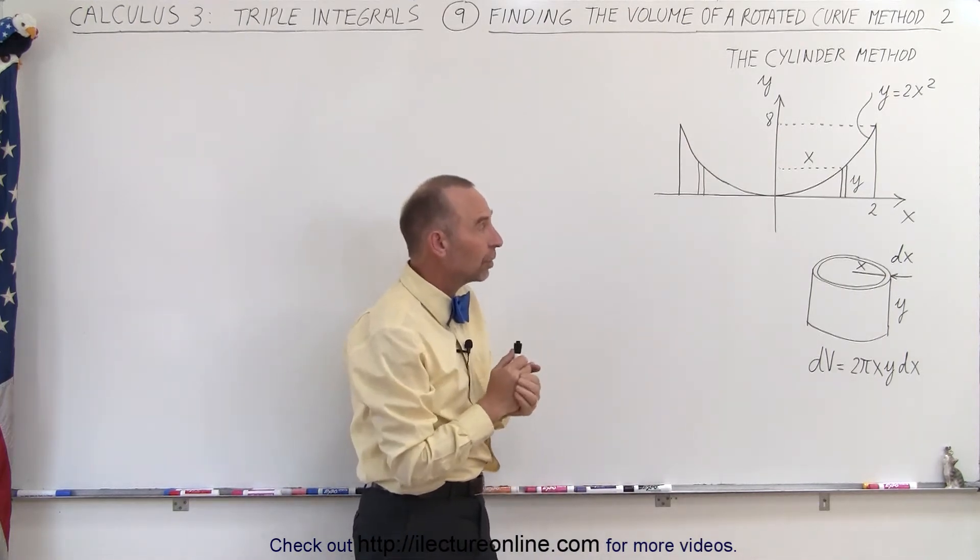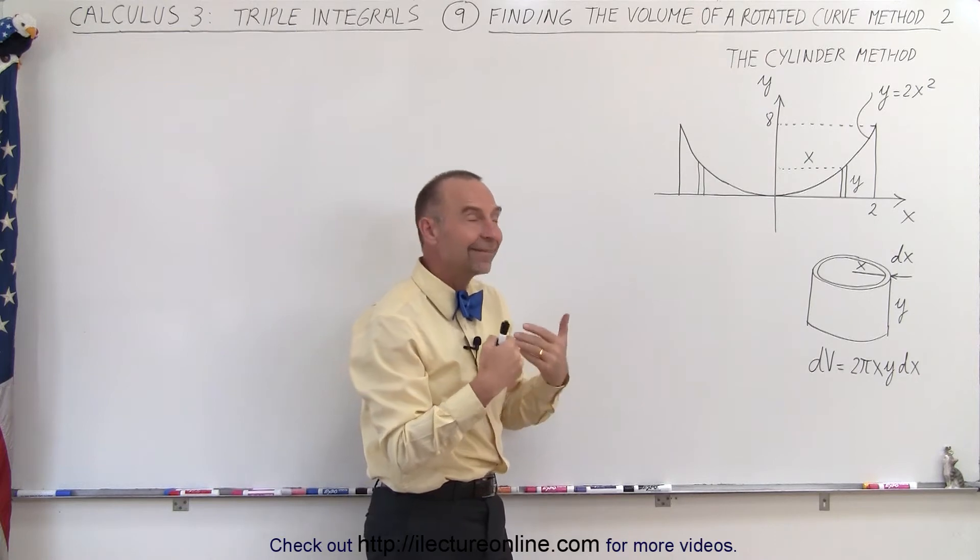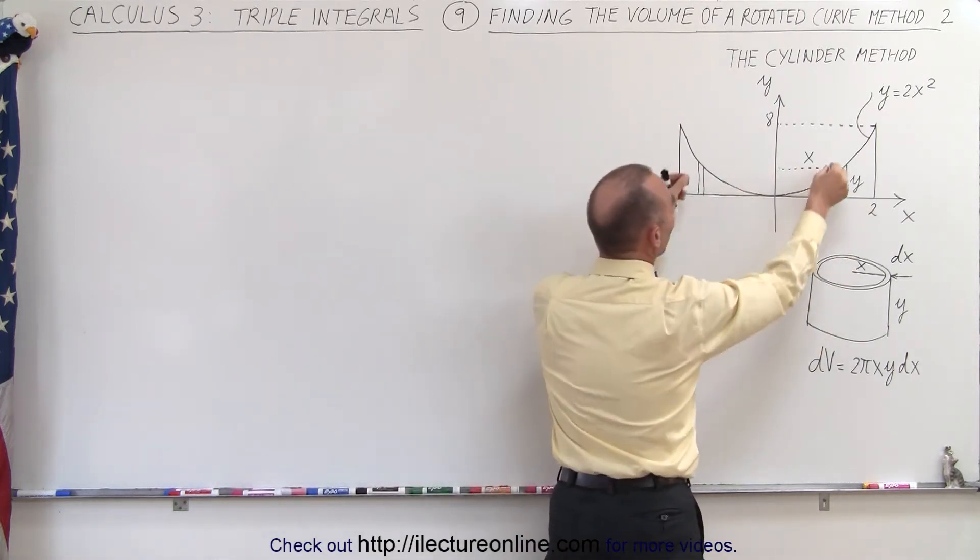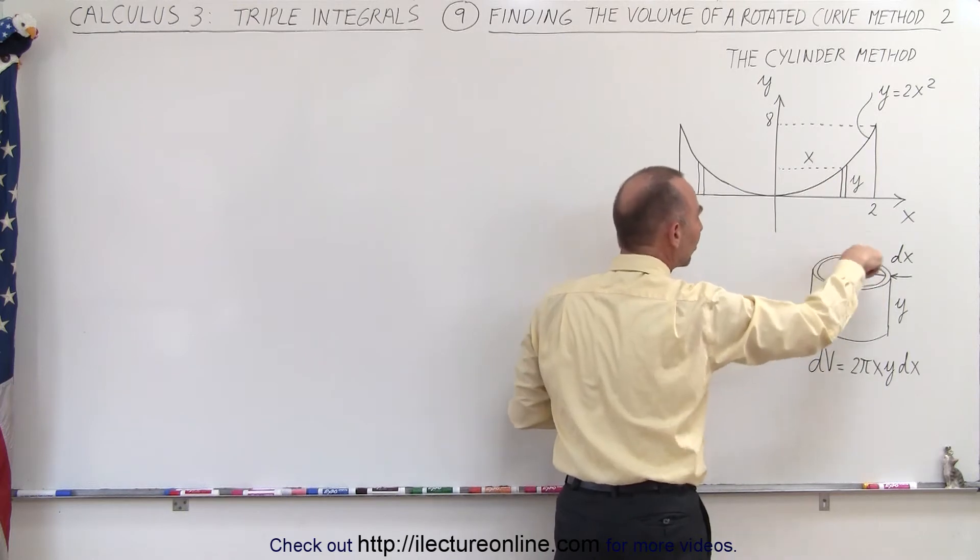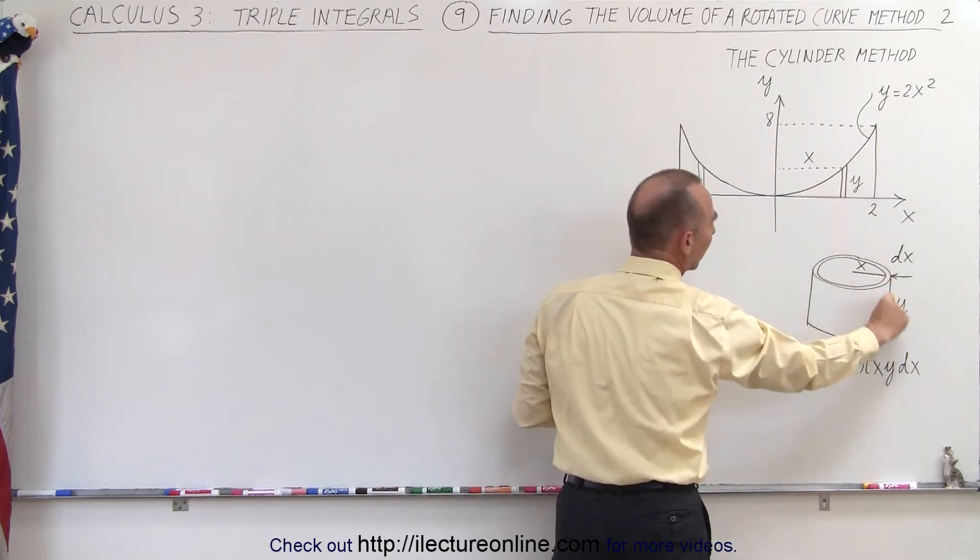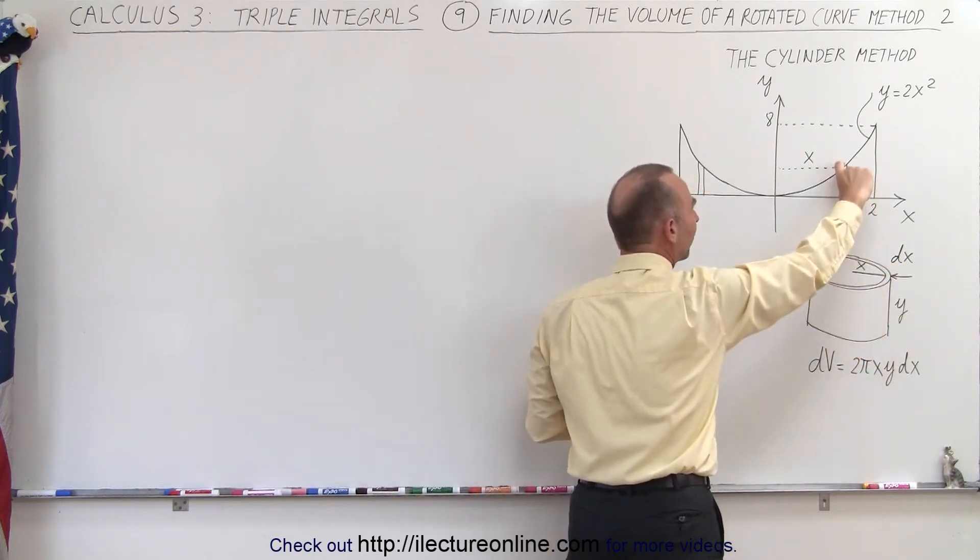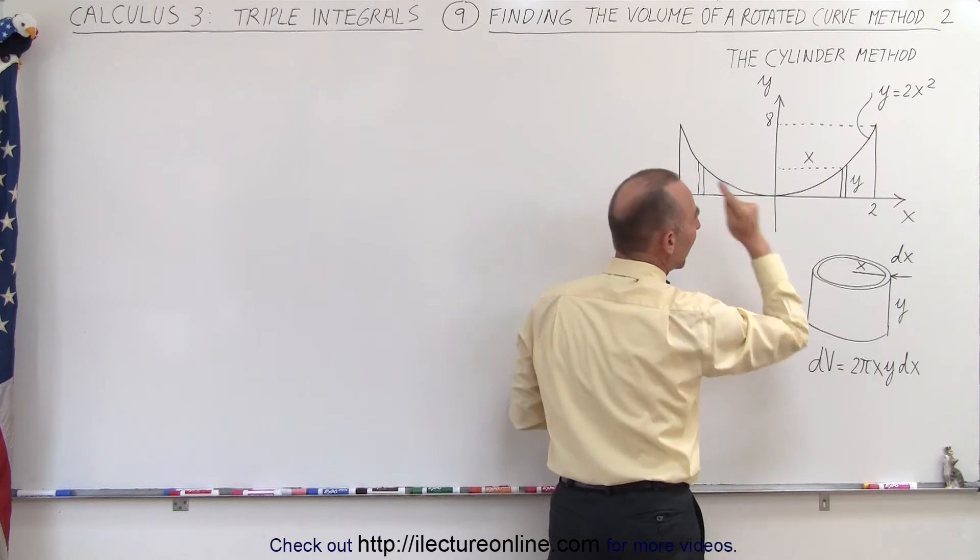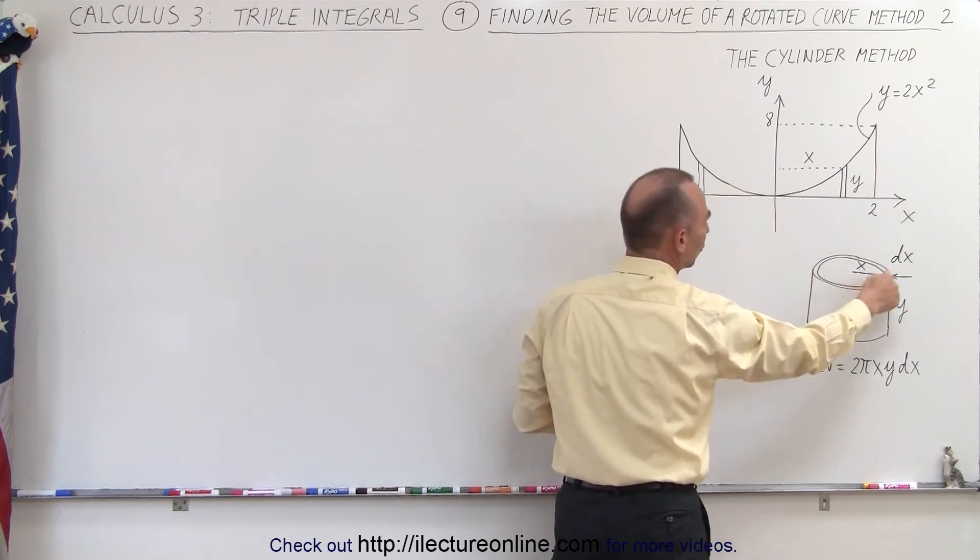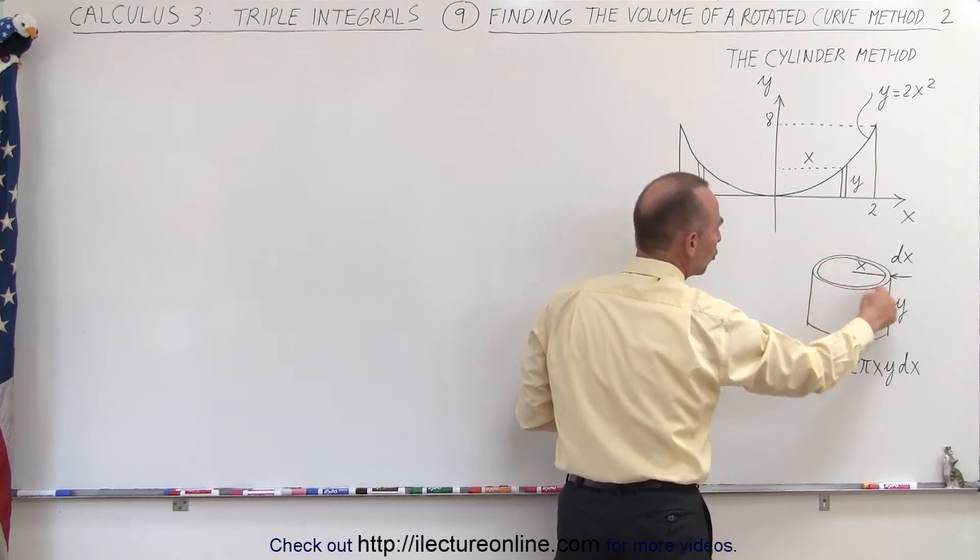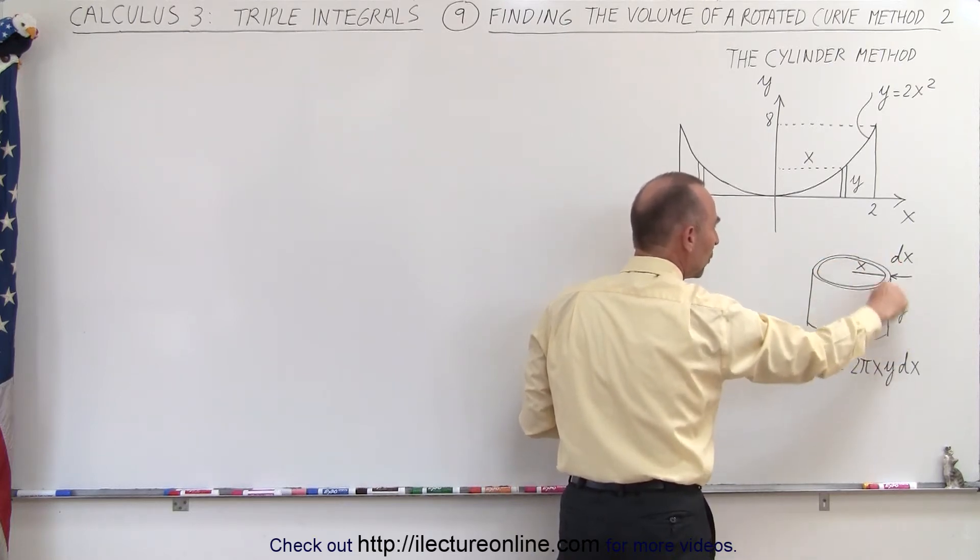We don't have to use the triple integral. We can use simply a single integral. What we can do is simply carve out a small little hollow cylinder that has thickness, very small thickness dx. It has the height y from the x-axis to where we hit the curve, and then you can imagine the circumference here, which if we go all the way around with a radius x, the circumference would be 2 pi x.